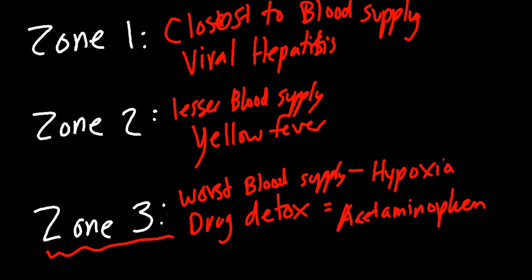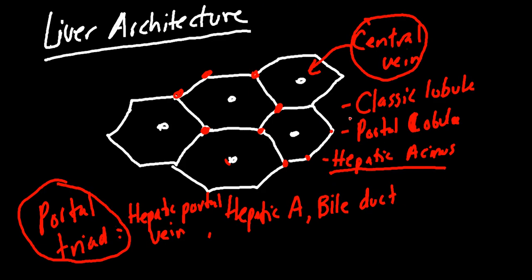To recap: the classic lobule is the anatomic model; the portal lobule model is used when thinking about bile excretion; and the hepatic acinus is the model for understanding blood flow and zones. We also covered the portal triad, the central vein, and the basic structure and function of the liver.